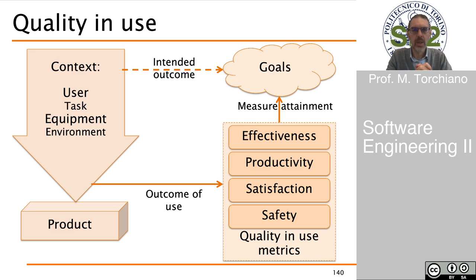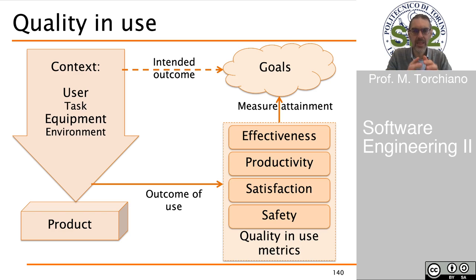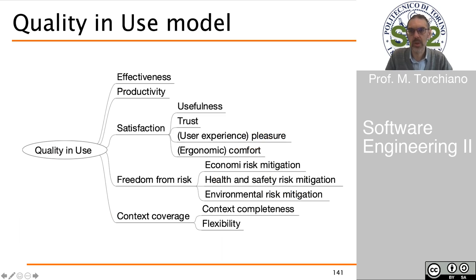The results of using the system to achieve a goal can be measured in terms of quality in use. Quality in use mainly focuses on effectiveness in achieving the goal, productivity as the ratio between the result obtained and the effort employed, the satisfaction the user gets from using the software, and safety. The quality model for quality in use includes effectiveness, productivity, satisfaction, freedom from risk, and context coverage.